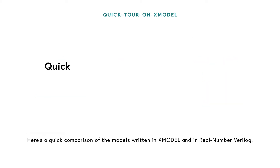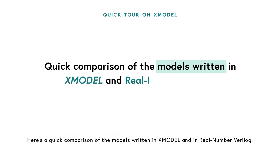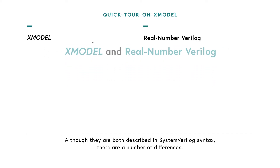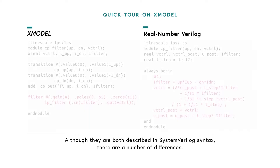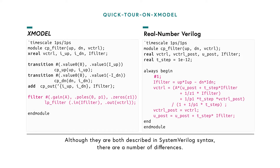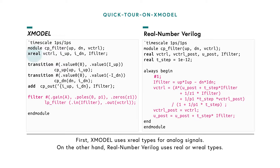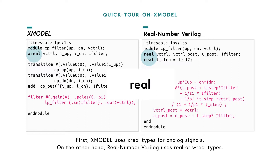Here's a quick comparison of the models written in X-Model and in Real Number Verilog. Although they are both described in SystemVerilog syntax, there are a number of differences. First, X-Model uses X-Real type for analog signals, while Real Number Verilog uses Real or W-Real types.